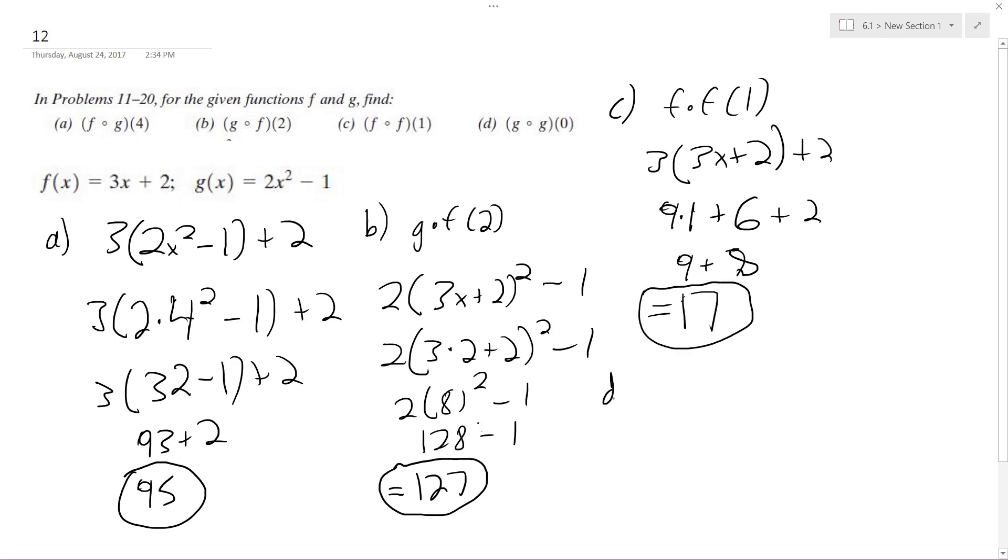And our final part, g of g of 0. 2, 2x squared minus 1, squared minus 1.